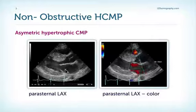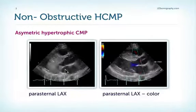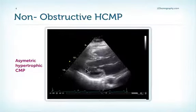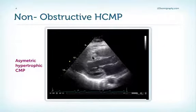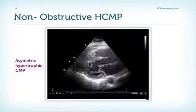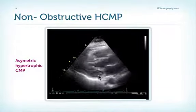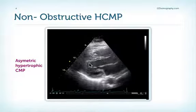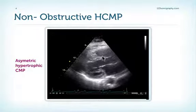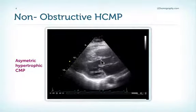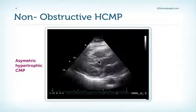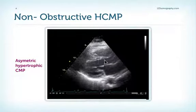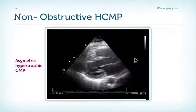We'll talk about the SAM or systolic anterior motion phenomenon later. Here is another example: you can see that the septum is much thicker than the remaining portions. The mid-septum is thick and not the basal portions. So this too is a hypertrophic cardiomyopathy, an asymmetric type.